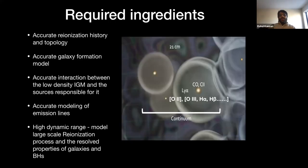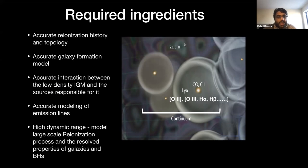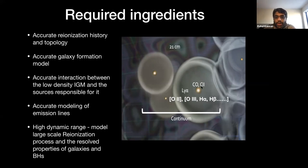In order to model what these instruments will measure, you need accurate reionization history and topology. You need accurate galaxy formation to get the right measurements for the lines themselves. You need to know how the interaction between radiation from the galaxies and the IGM takes place and what sources are responsible. You also need accurate modeling of the emission lines themselves. And you need a high dynamic range because you need to understand both the properties of galaxies — on order kiloparsec scales — and the large-scale statistics of the reionization process, so hundreds of megaparsec scales.